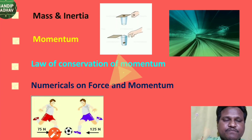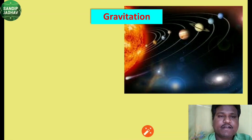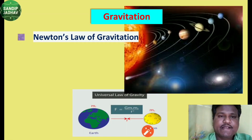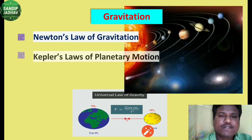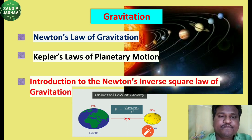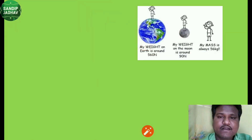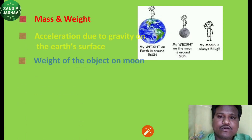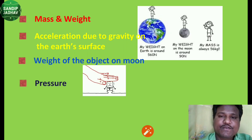The third chapter is Gravitation. Here we will see Newton's law of gravitation as well as Kepler's laws of planetary motion, and an introduction to Newton's inverse square law of gravitation. We will also study mass and weight, how to calculate the weight of an object on the surface of the Moon, and acceleration due to gravity on Earth's surface and how it affects the weight of any object.